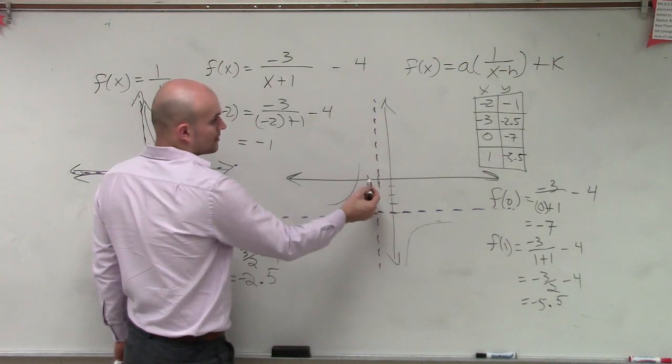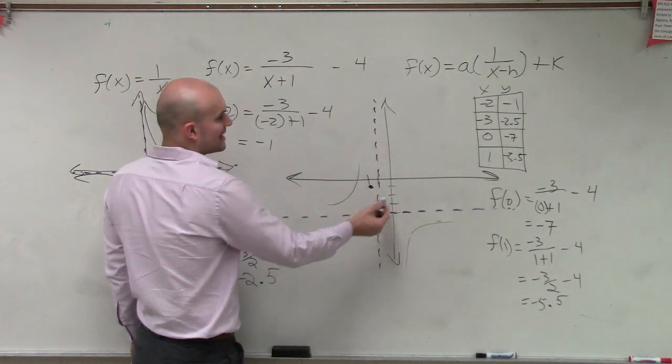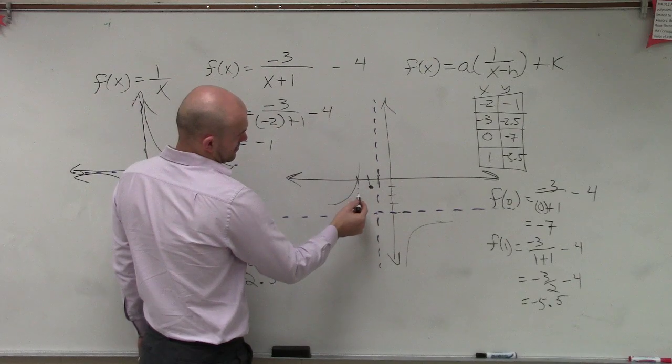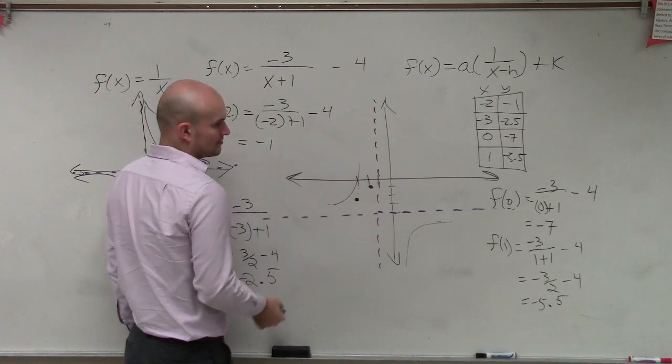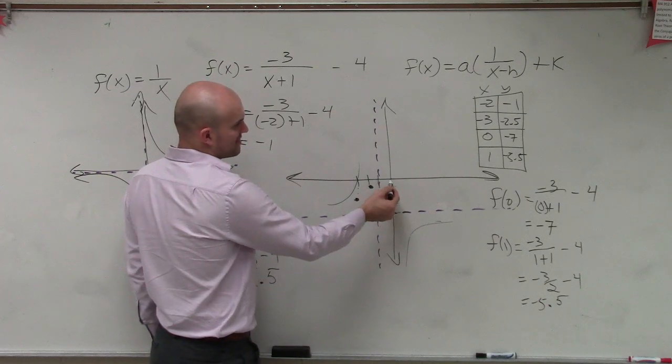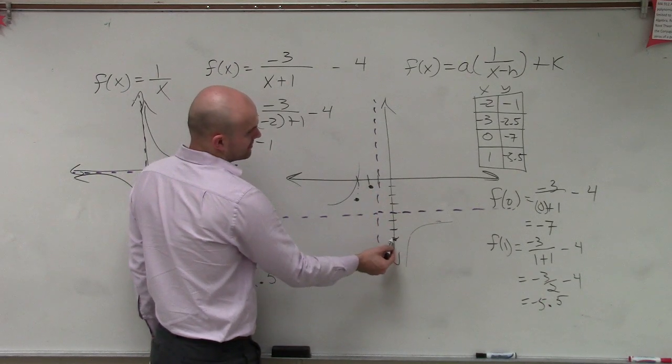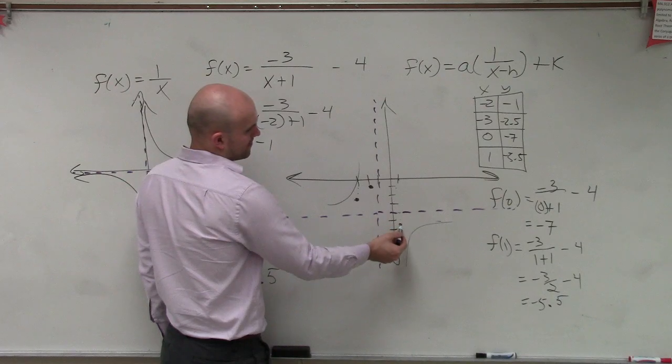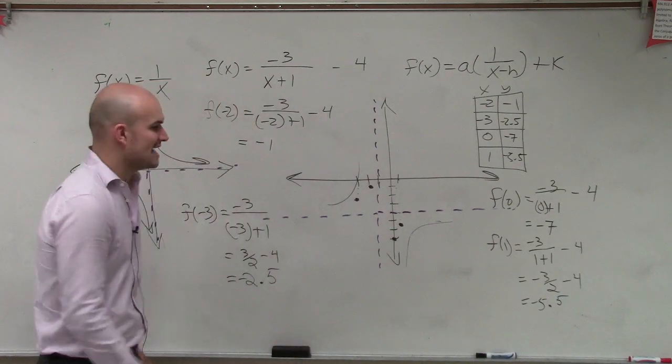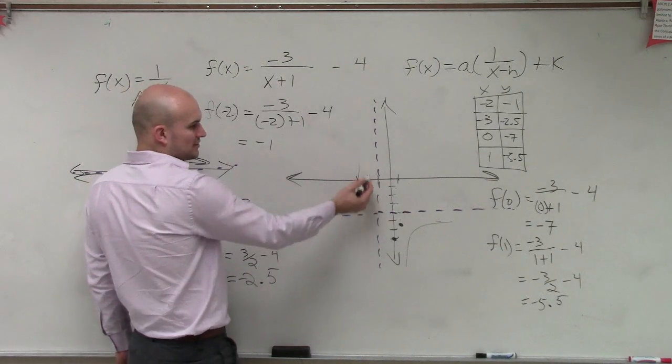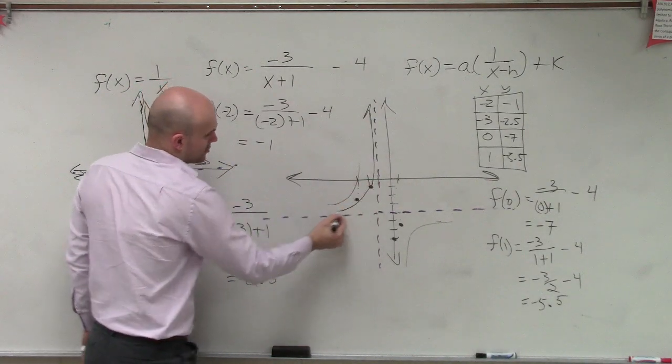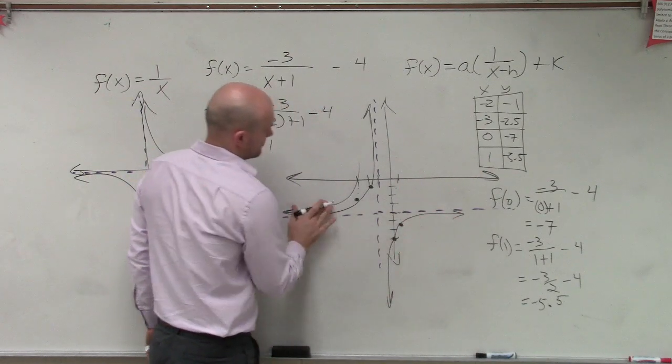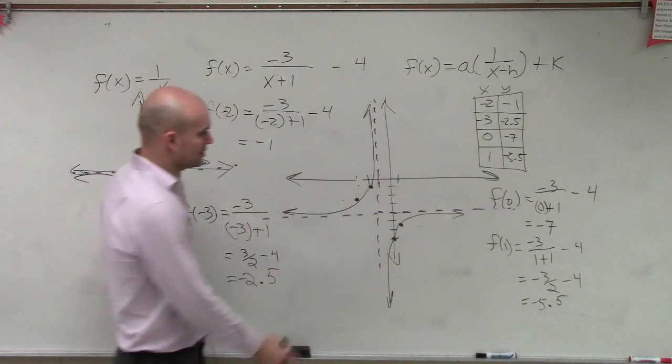Negative 2, negative 1. Now, at negative 3, we have negative 2.5. Let's go and take a look at 0. At 0, I have negative 7. 1, 2, 3, 4, 5, 6, 7. And at 1, I have negative 5.5. 1, 2, 3, 4, 5. So what you guys can see is the actual shape. So remember, the graph has to go through these two points and then approach each asymptote. So the actual shape of the graph is going to look like that.